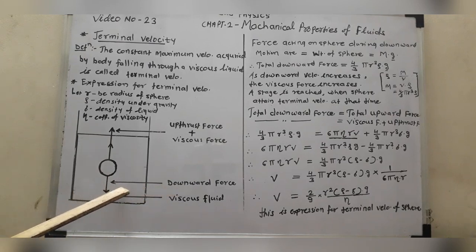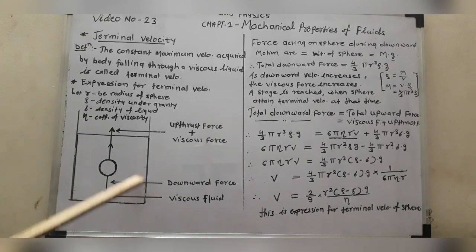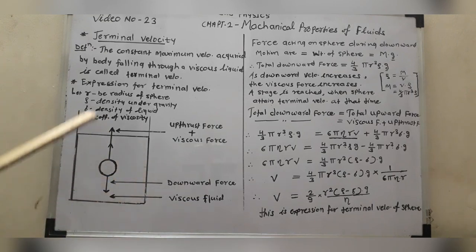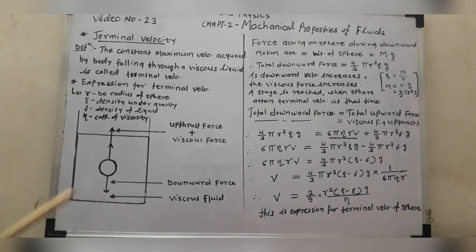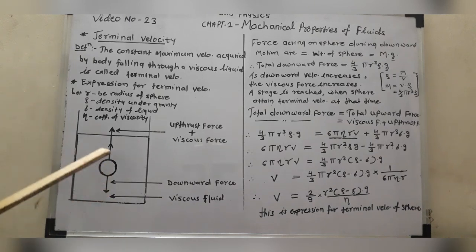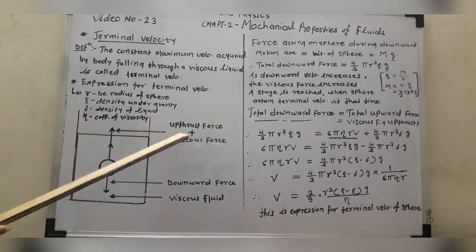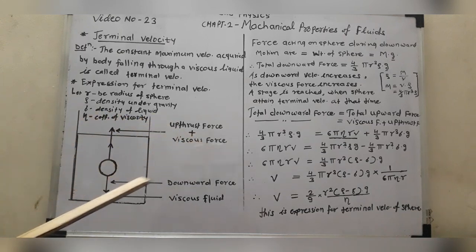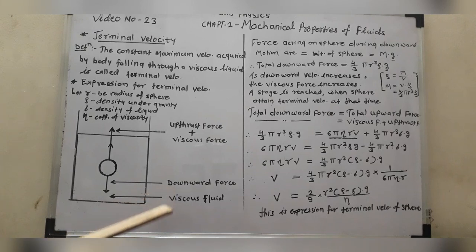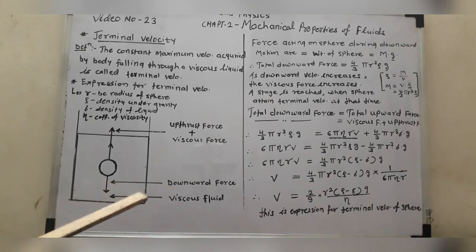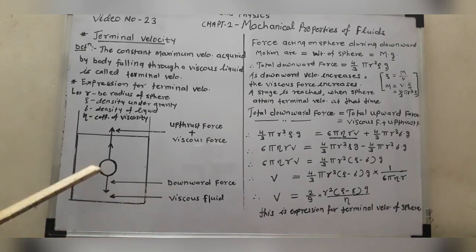The total downward force acts on the sphere falling through this viscous medium. The velocity at which the upward force — the sum of the upthrust force and the viscous force — is balanced by the total downward force, which is equivalent to its weight mg, is when the terminal velocity is created.